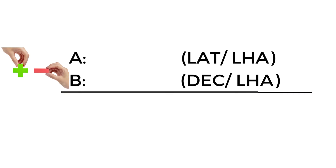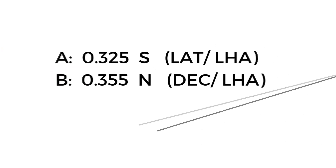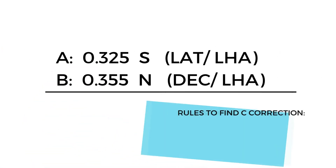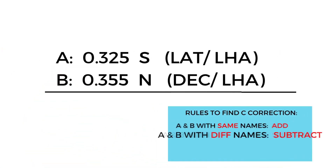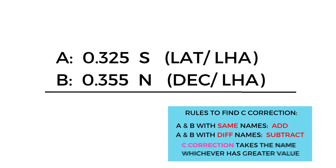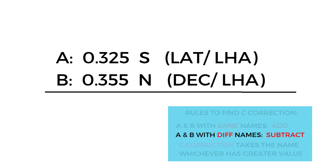The rules for whether to add or subtract are: if A and B have the same names, add; if A and B have different names, subtract. After that, the C correction takes the name of whichever has the greater value.